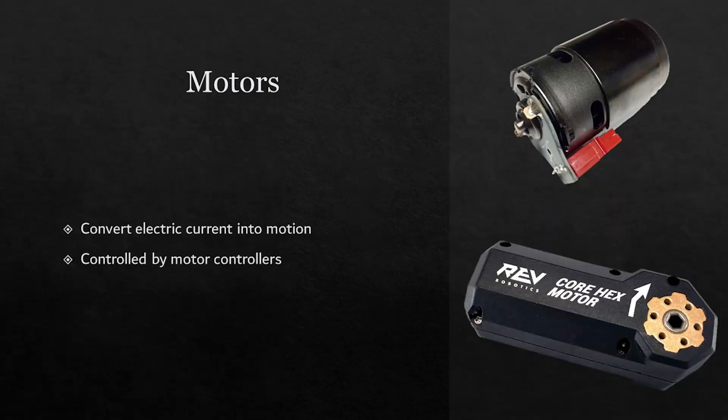Motors are what creates motion on the robot. They convert electrical power that is being given into motion. Motors are very specific to what competition they are being used in, as each has a list of exactly what motors are allowed to be used.